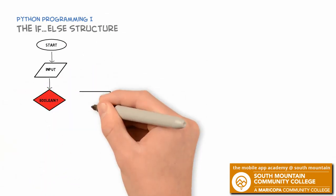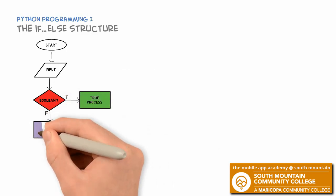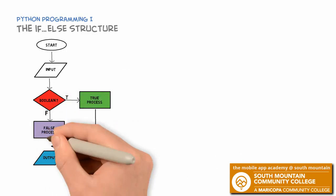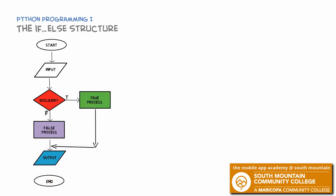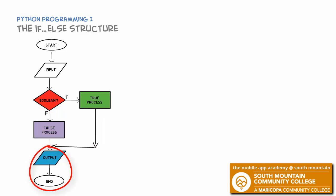In an if-else, we ask our Boolean question as we did before, and we have a true fork like we did before with the if structure, but then we also add an else clause which contains a totally different process that will take place if that Boolean condition evaluates to false. Both paths continue on with statements after that if structure.